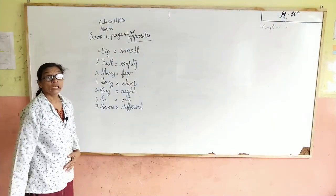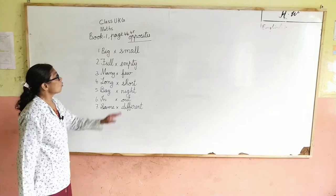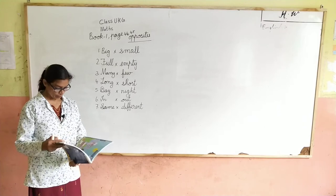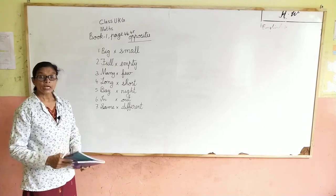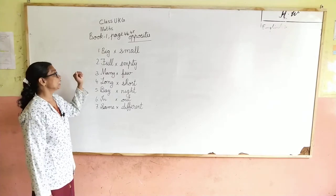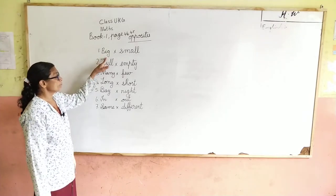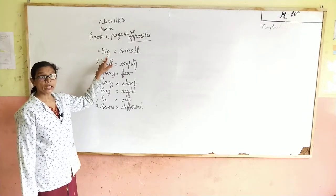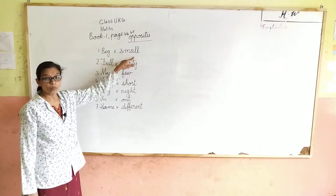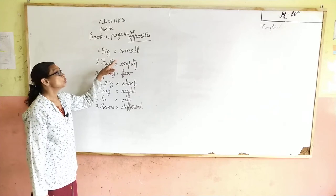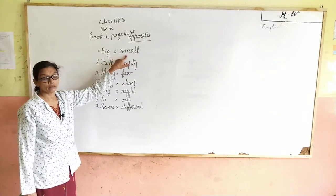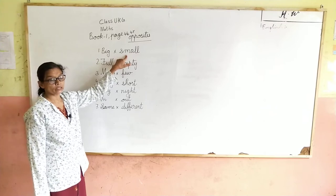Listen here — opposites. In book number 1, page number 44 and 45, you are going to read this in the notebook. Big means big, small means small. The opposite of big is small.